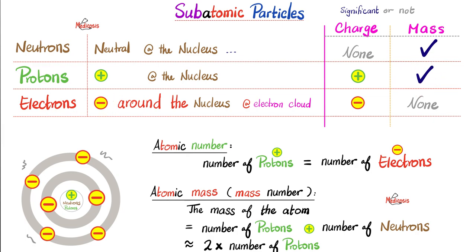Electrons are negatively charged and are found around the nucleus in the electron cloud. Do they carry a charge? Yes, it's a negative charge. Should I worry about the mass? No — it's very tiny. You can neglect it.